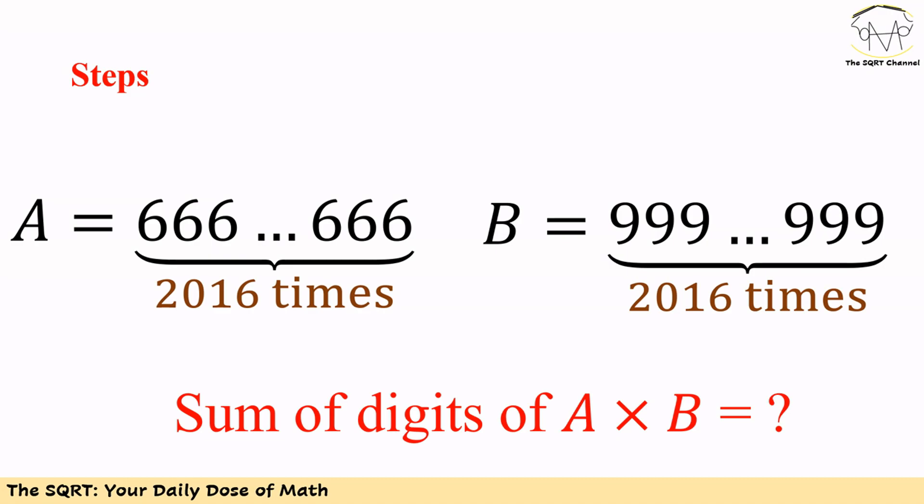To wrap up, let's summarize what we did to solve this problem. We had two numbers A and B, and we noticed that B can be written in a more simplified way — as a power of 10 minus 1. Then we converted the multiplication into a subtraction of two numbers, used the long subtraction method, found the final answer, and calculated the sum of the digits.